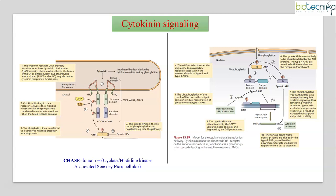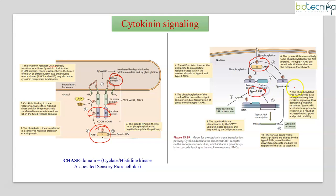In the cytokinin signaling pathway, cytokinin binds to the CHASE domain of receptor CRE1. Since it is a two-component system, the histidine kinase domain will be autophosphorylated, transferring the phosphate to the aspartate residue on the receiver domain. That in turn transfers the phosphate to the Arabidopsis histidine phosphotransfer protein, referred to as pseudo-HPs (AHP). This AHP diffuses into the nucleus.